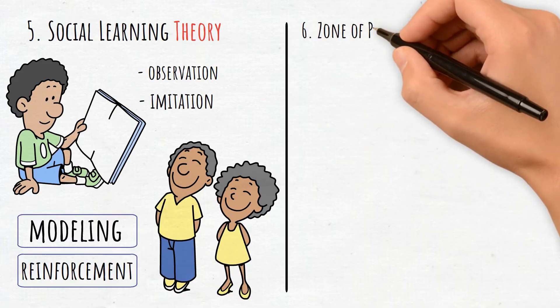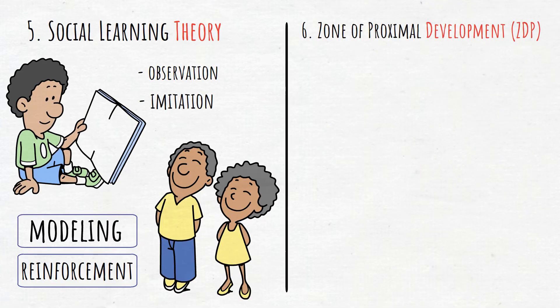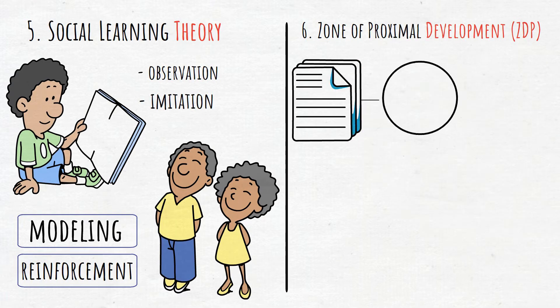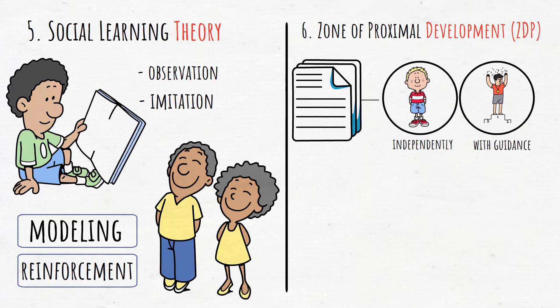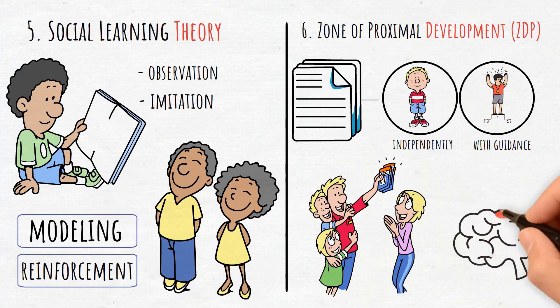6. Zone of Proximal Development, or ZPD. This concept refers to the gap between what a child can do independently and what they can achieve with guidance. This emphasizes the role of social interaction in learning.